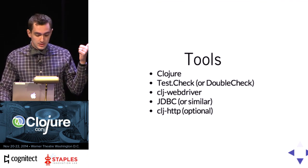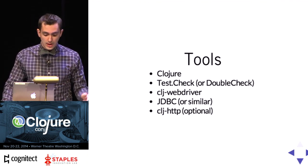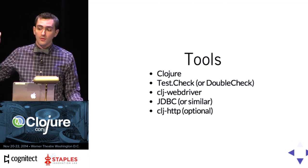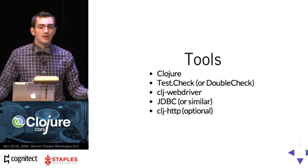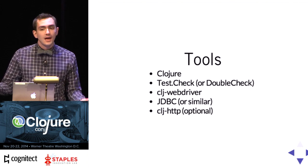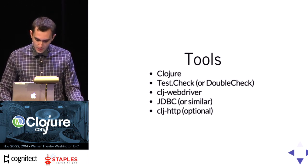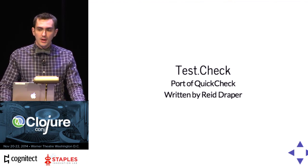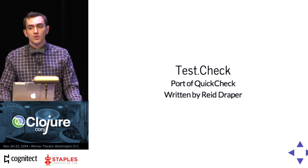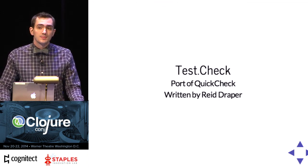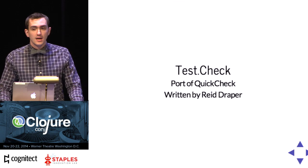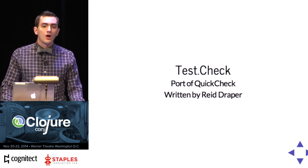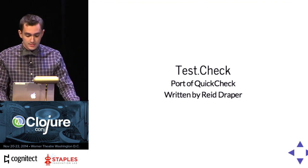And CLJ-HTTP — if you need to do API work for testing and for setup, having a lightweight HTTP library is useful. Most important tool is test.check, which has been covered before, originally written by Reid Draper among others. It's a port of the famous Haskell QuickCheck library. There are other alternatives in this space — obviously this is a Clojure conference, I like Clojure, so I'm going with that one instead of QuickCheck. There are Ruby equivalents, but they're not quite to the level of maturity of test.check at this point.